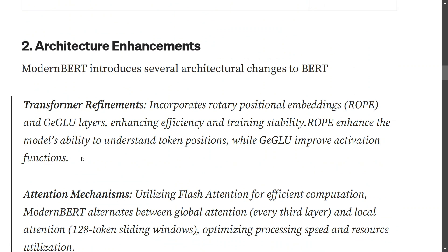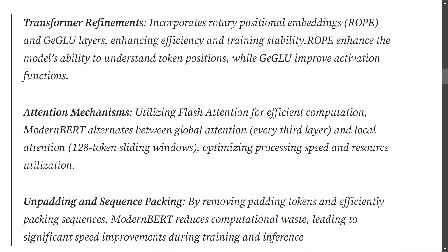Regarding architectural enhancements, BERT was missing things like Rotary Positional Embeddings (RoPE) and GeGLU layers. RoPE enhances the model's ability to understand token positions better compared to standard positional embeddings, while GeGLU improves the activation function. Additionally, ModernBERT uses Flash Attention 2, which can alternate between global and local attention. In global attention, a token attends to all other nodes, while in local attention a window-based approach is used, looking only at vicinity nodes for better speed and resource utilization.